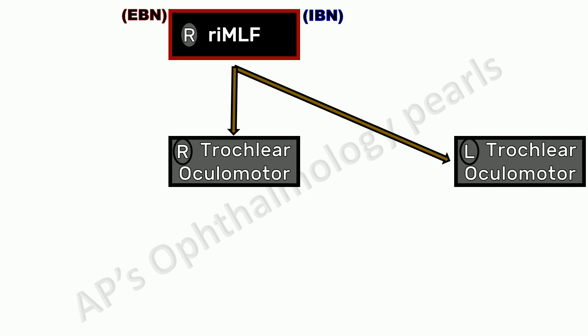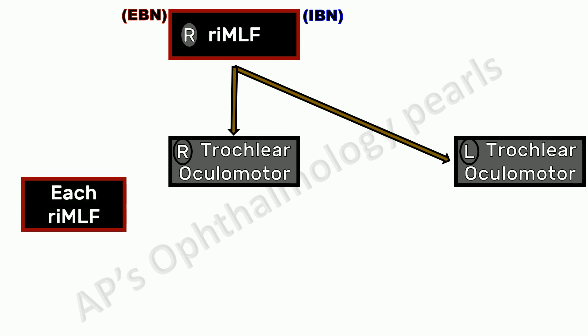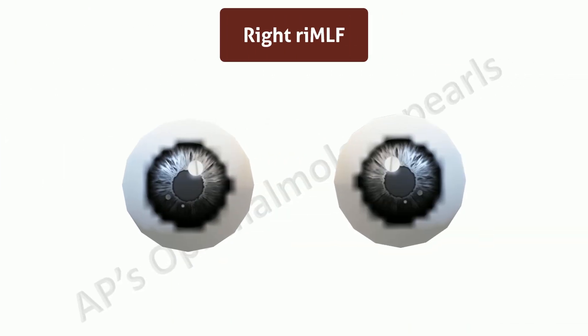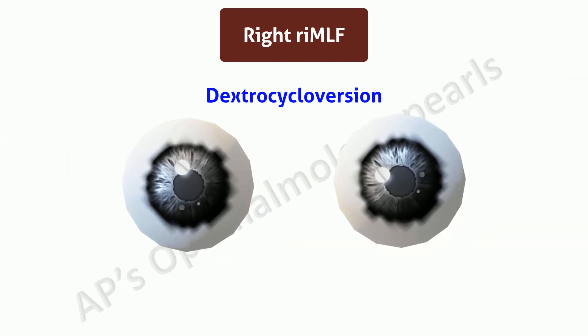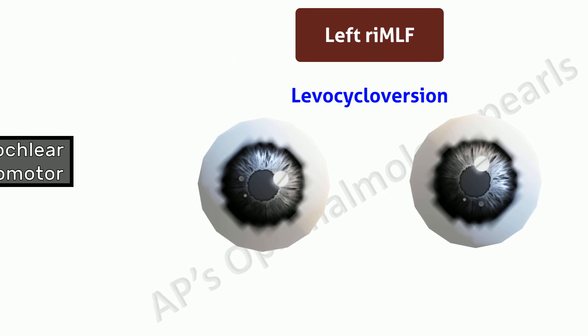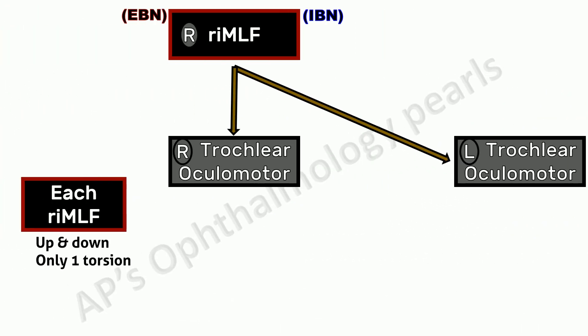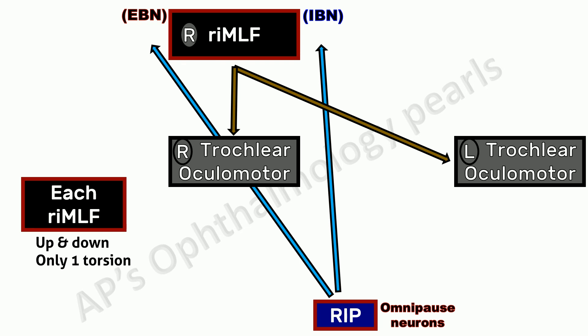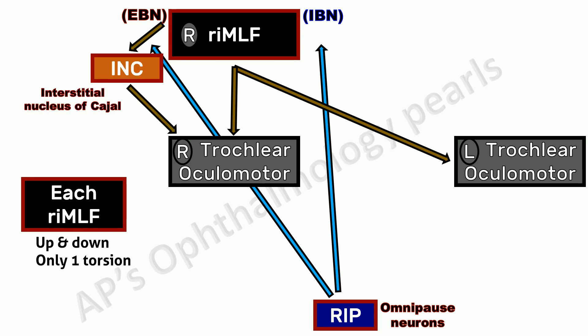Each burst neuron sends axon collaterals to motor neurons supplying yoke muscle pairs. Each RIMLF contains burst neurons for upward and downward movements, but only one direction for torsional movements. Thus, the right RIMLF discharges for dextrocycloversions and the left RIMLF discharges for levocycloversions. The omnipause neurons in the nucleus raphe interpositus keep the burst neurons from discharging except just before and during saccades. The neural integrator for generation of the step of vertical and torsional saccades is the interstitial nucleus of Cajal.